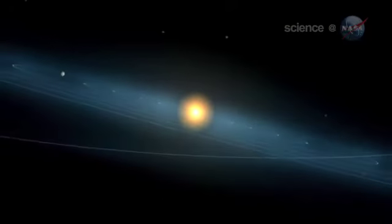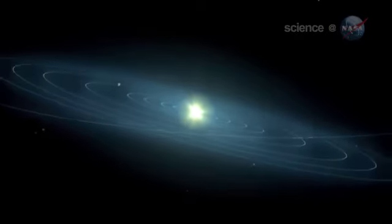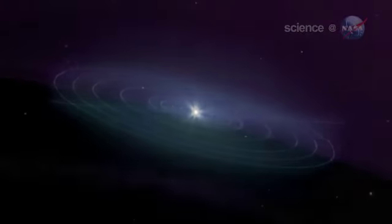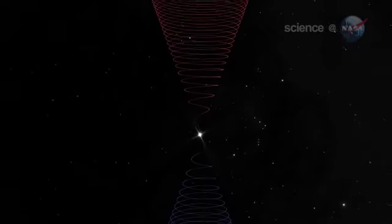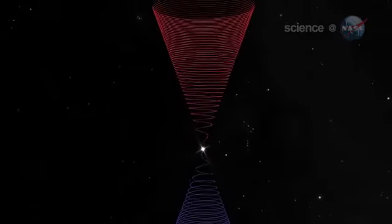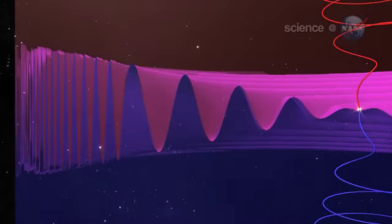The sun's magnetic field extends all the way to the edge of the solar system, explains Offer. Because the sun spins, its magnetic field becomes twisted and wrinkled, a bit like a ballerina's skirt. Far, far away from the sun, where the Voyagers are now, the folds of the skirt bunch up.